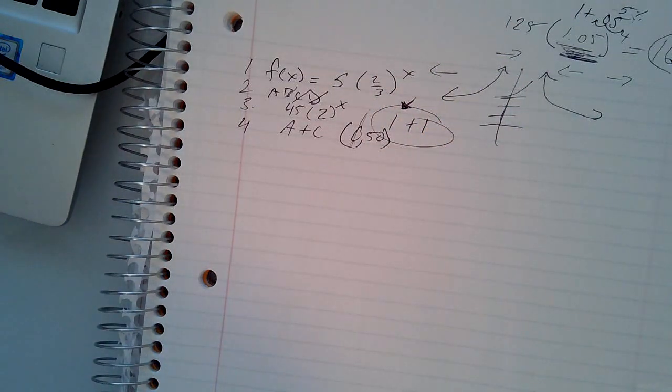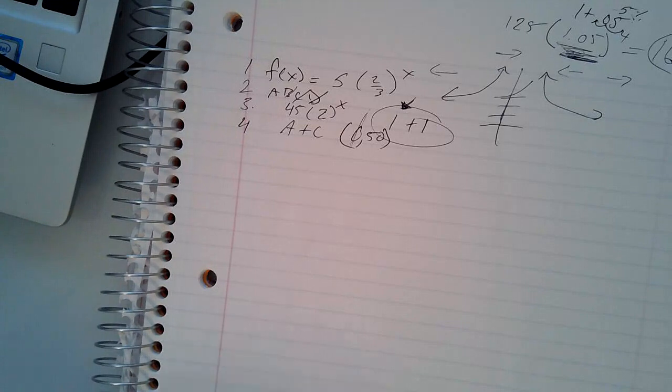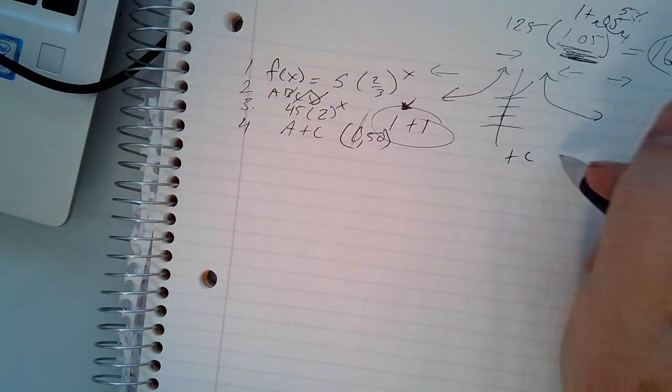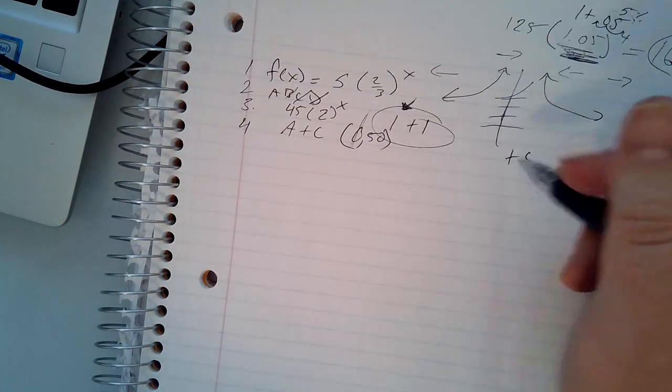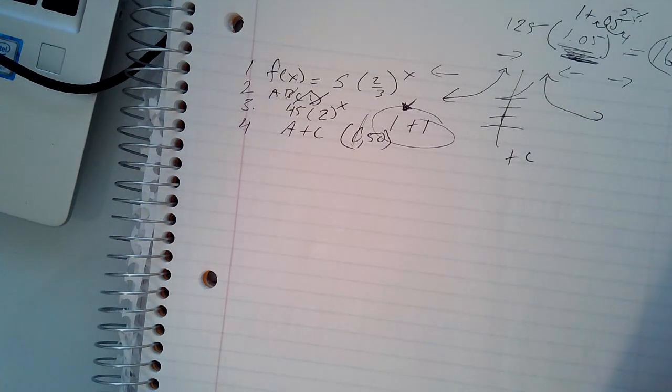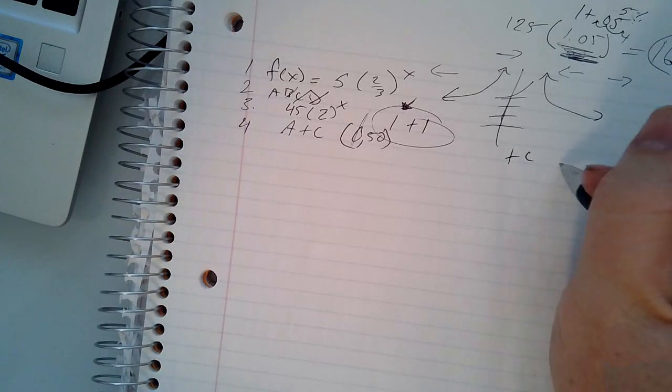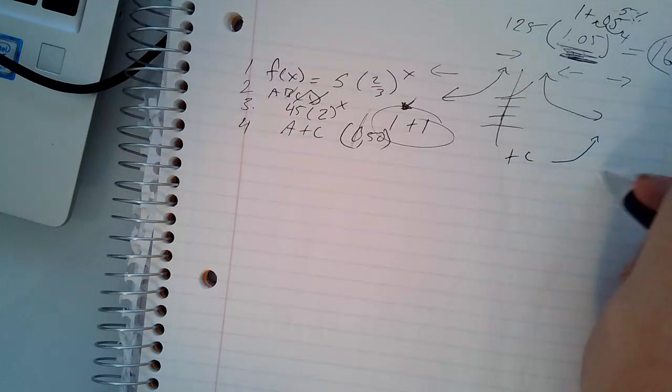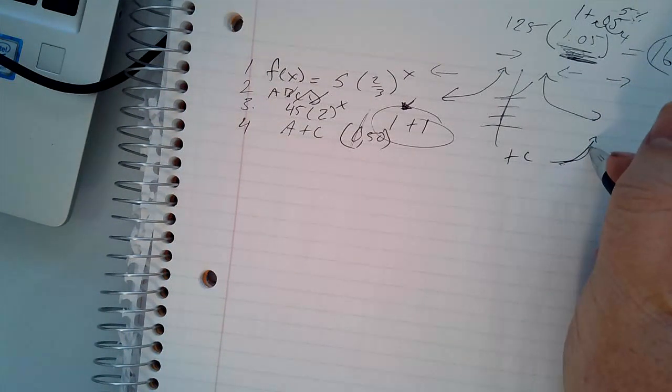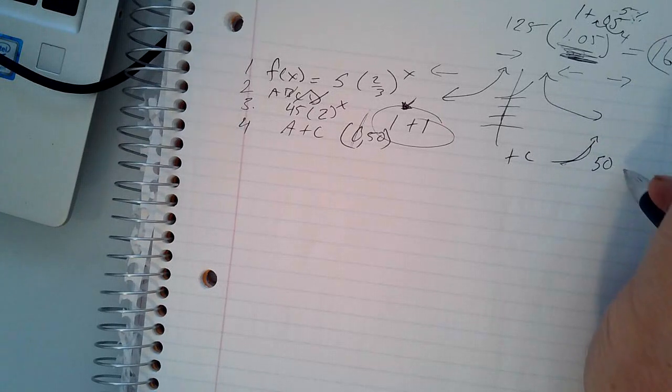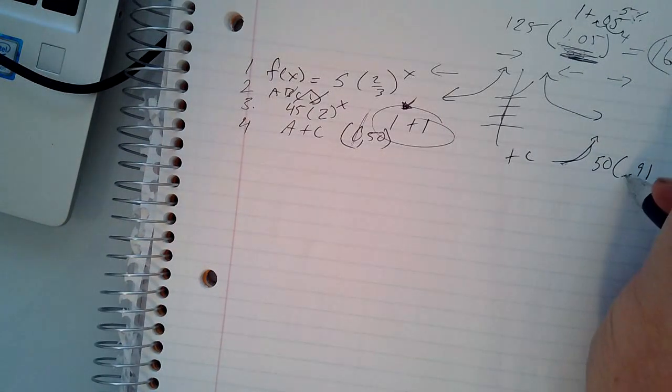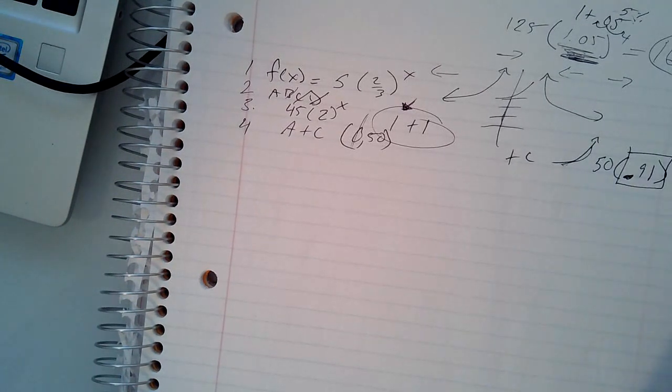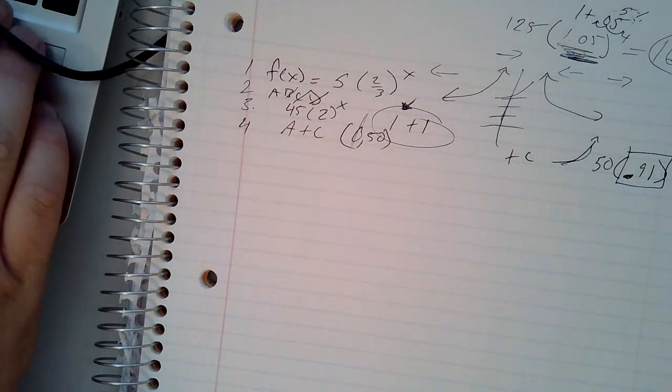And C says the graph has an asymptote at Y = 50. If you recall from our notes, that plus C is the asymptote. There is no plus C. So that means it's got to be 0. So that means C is out of the question. And then D, the graph increases from left to right. Increases from left to right means it's a positive-shaped graph. As X increases, Y increases, and that shows exponential growth. If you look at the equation of 50 times 0.91, we know that that is exponential decay because this number is less than 1. So it would be B.